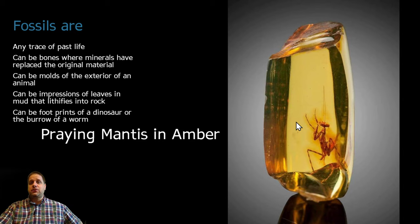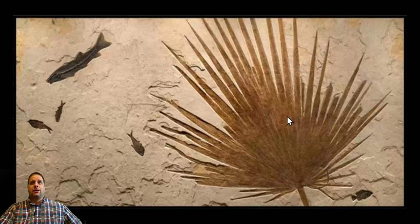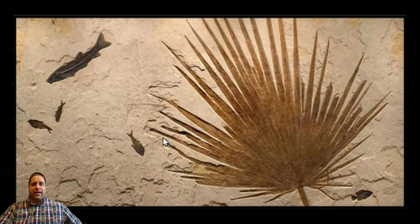Here's a praying mantis trapped in amber. Amber is fossilized tree sap, and so this counts as a fossil also, even though it hasn't been turned into rock or recorded in a rock. Lots of different kinds of things can be fossilized, including animals, plants, or anything else.